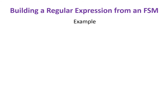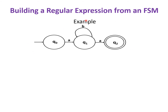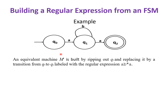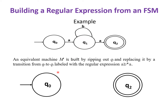For example, given a FSM, an equivalent machine M' is built by ripping out q1 and replacing it with a transition from q0 to q1 labeled with the regular expression ab*a. The regular expression obtained from this FSM is ab*a.